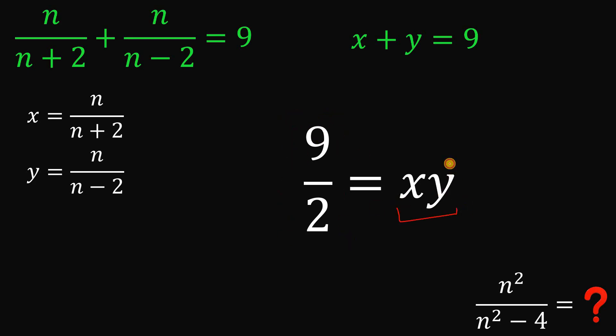Now the question, why do we get the product of x and y? Because, notice, x equals n over n plus 2 and y equals n over n minus 2.